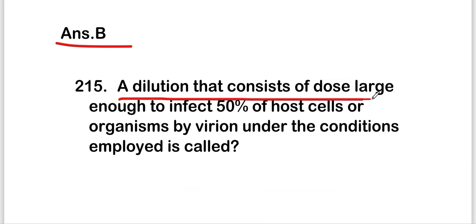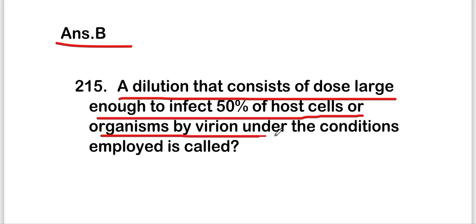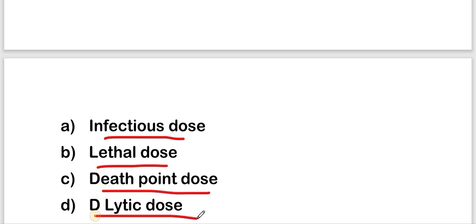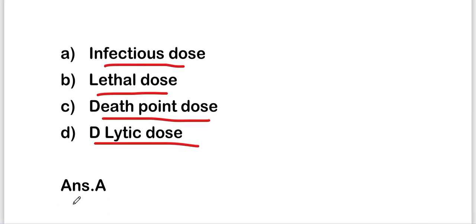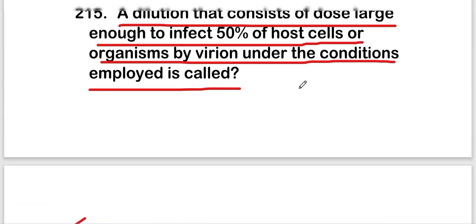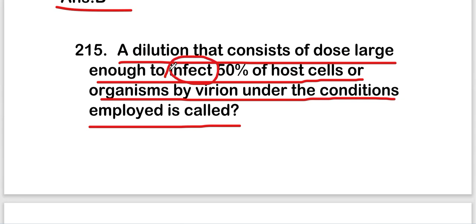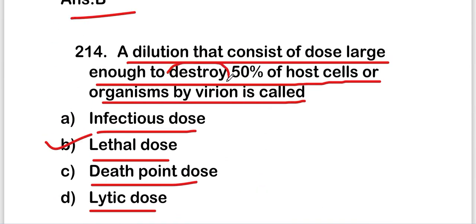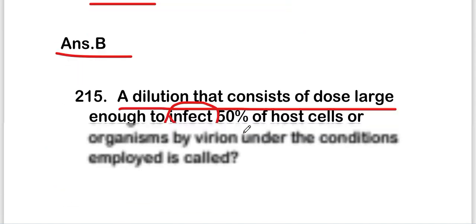The next question is: a dose large enough to infect 50% of host cells or organisms by virion under the conditions employed is called — infectious dose, lethal dose, death point dose, or lytic dose. The right answer is option A, infectious dose. The key distinction: infect 50% = infectious dose, destroy 50% = lethal dose.